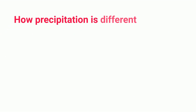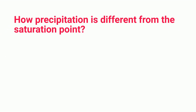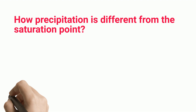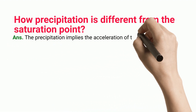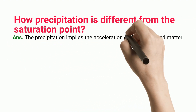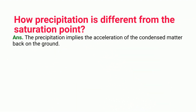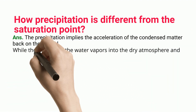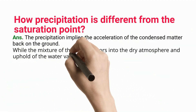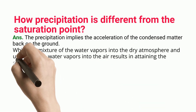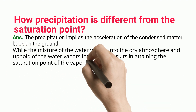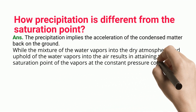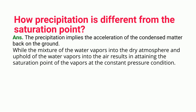How is precipitation different from the saturation point? Precipitation implies the falling of condensed matter back to the ground. In contrast, the mixing of water vapors into the dry atmosphere and the build-up of water vapors in the air results in attaining the saturation point of the vapors at constant pressure conditions.